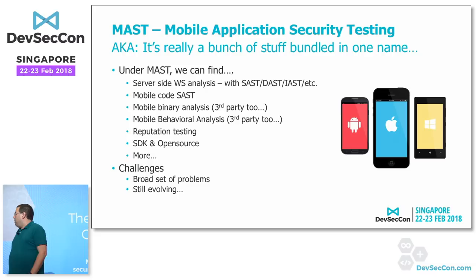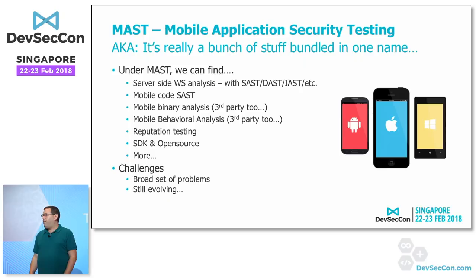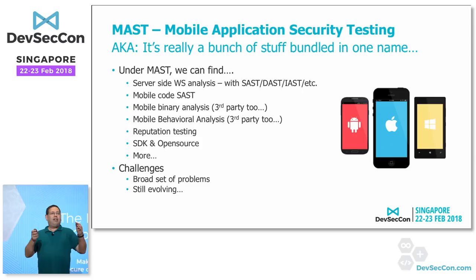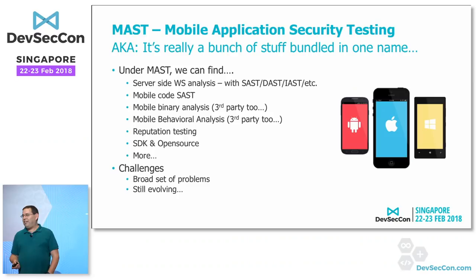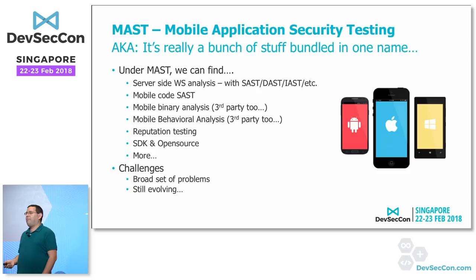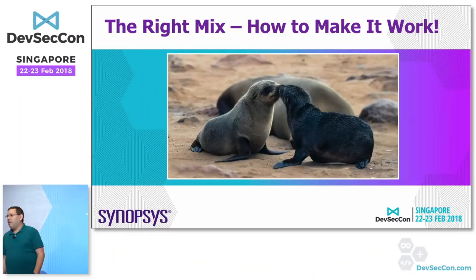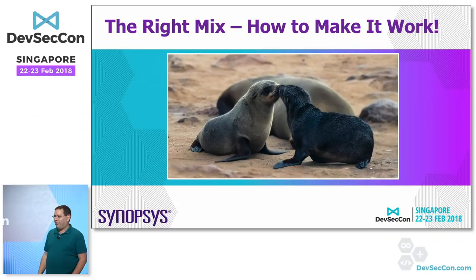One more buzzword: MAST — mobile application security testing. Gartner said there was SAST, DAST, IAST, and MAST. MAST is how we test mobile applications, and it's actually a combination of all the previous technologies plus behavior analysis, applied towards mobile applications. I'm not going to talk specifically about MAST because it's more of the same, but now you know the buzzword.